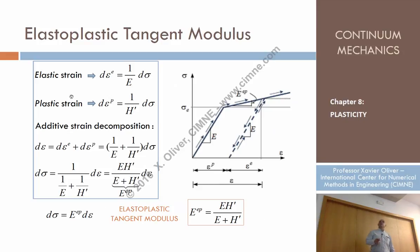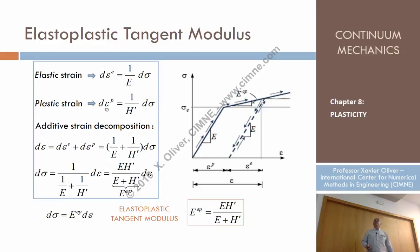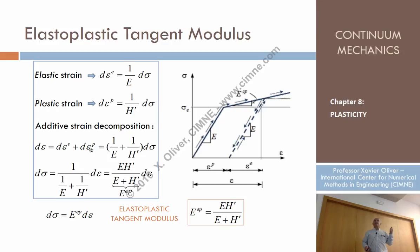Now we can combine two equations. From one side, we have obtained that the increment of plastic strain is 1 over H prime times the incremental stress. And we have another equation that says the incremental strain can be split into the elastic incremental strain plus the plastic incremental strain. Replacing these equations, the first term is 1 over E times the differential of sigma, the second one is 1 over H prime times the differential of sigma.